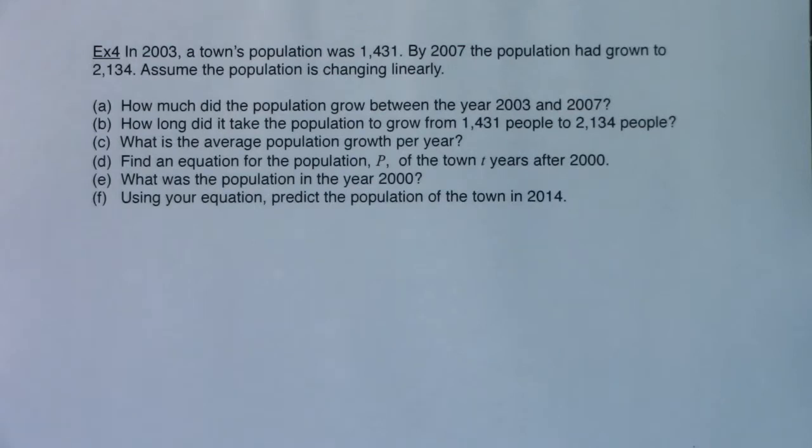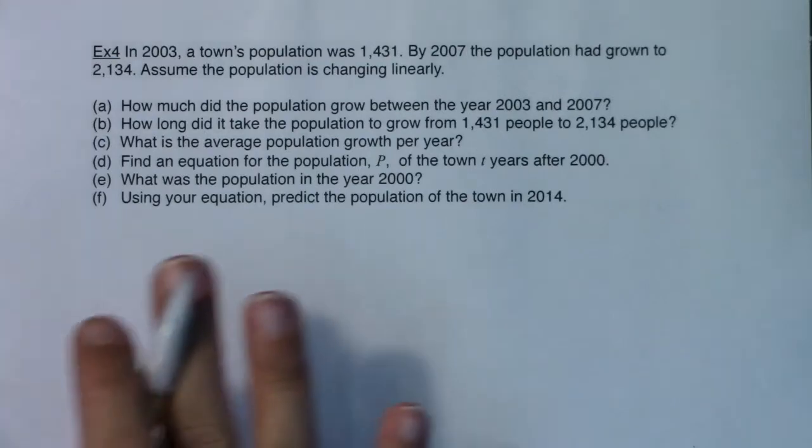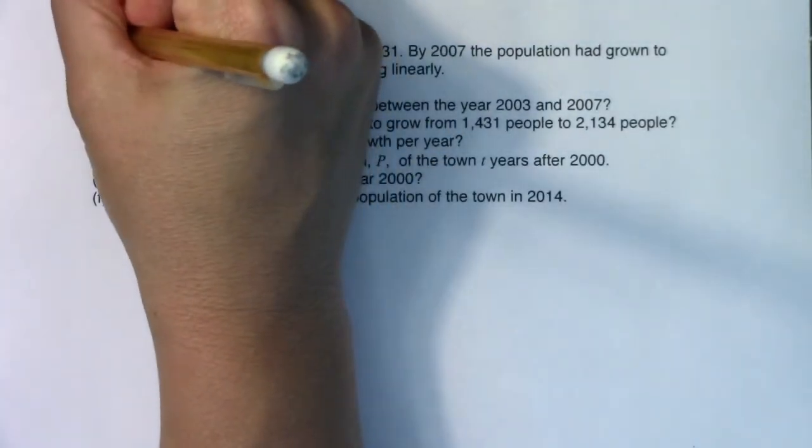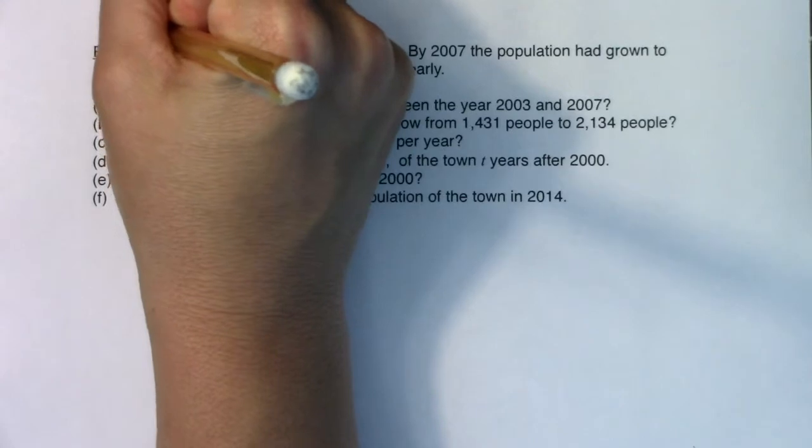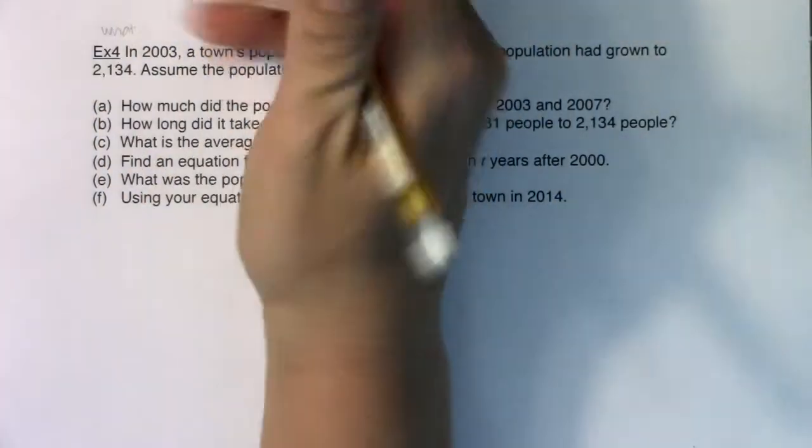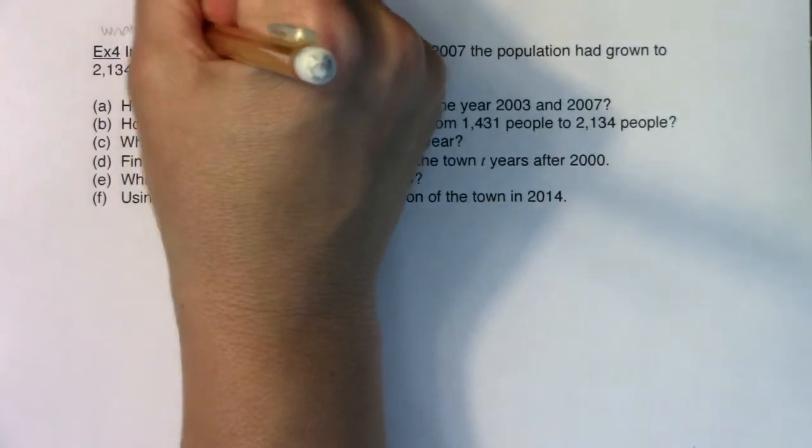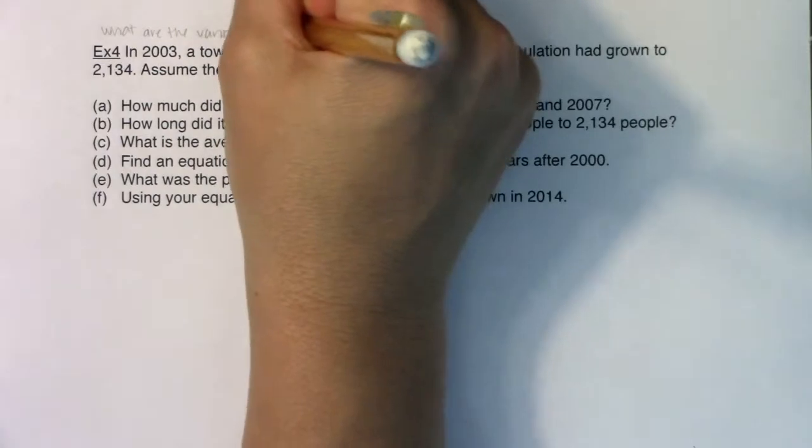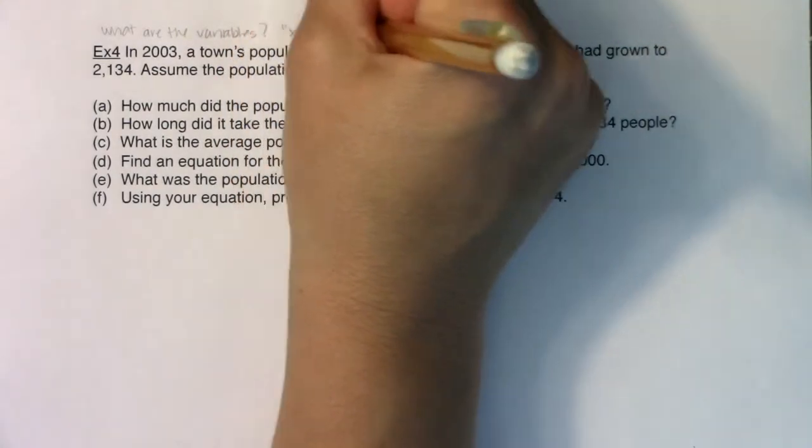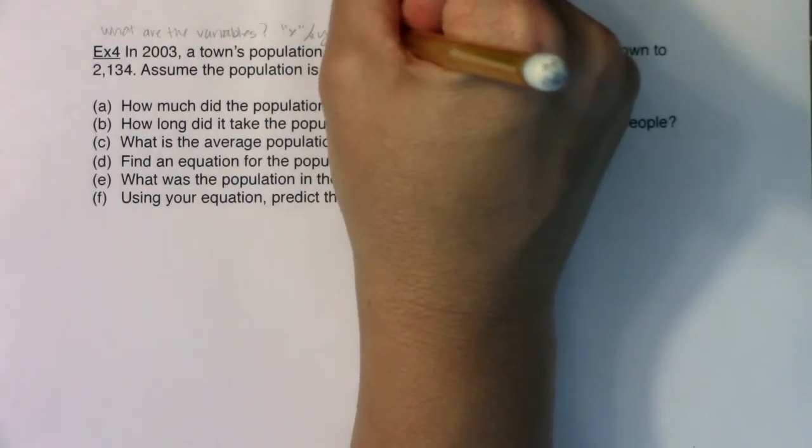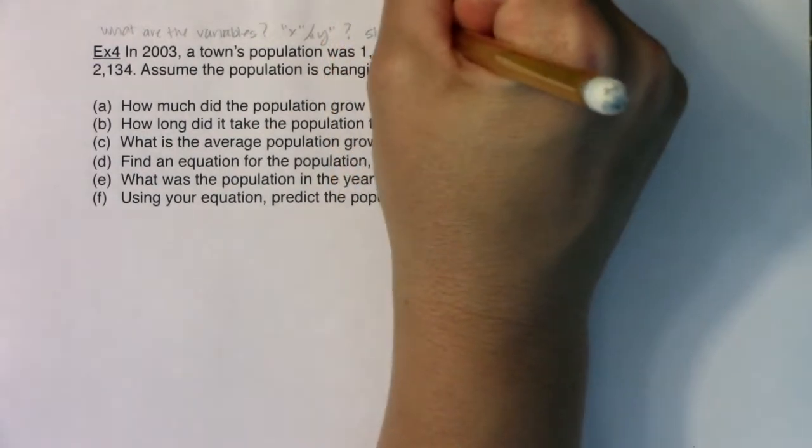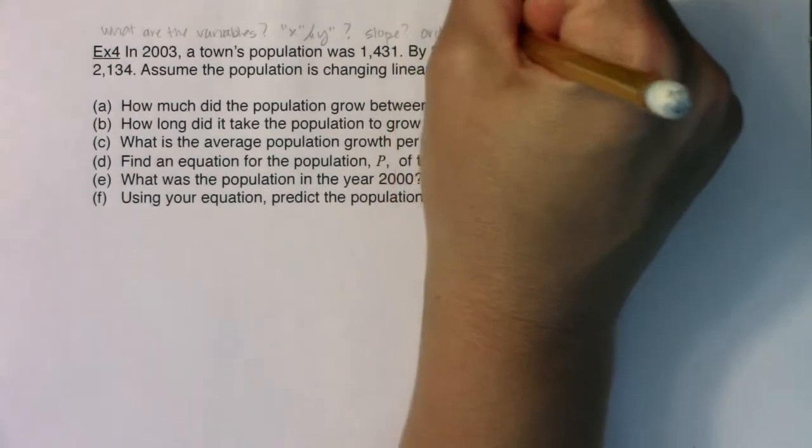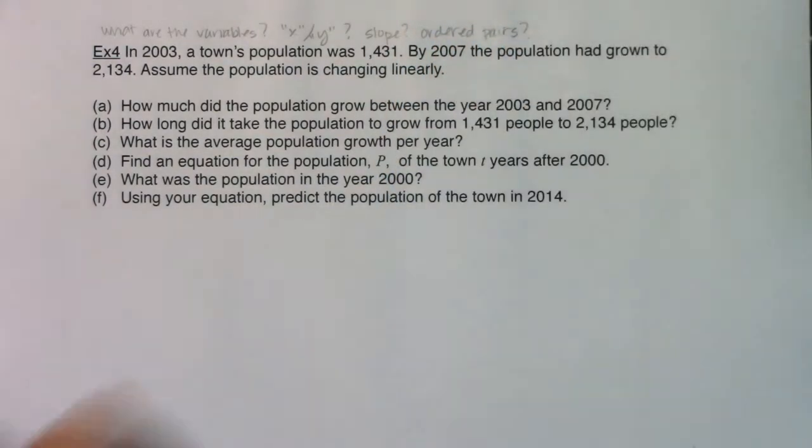Hey Math 31, we've arrived at our last example in section 4.2. Like with all of these examples, I want us to think about what are the variables we'll typically have two. What is X, what is Y if we're using those letters? Was I given a slope?